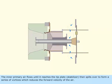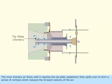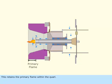The inner primary air flows until it reaches the tip plate, stabilizer, then spills over to form a series of vortices, which reduce the forward velocity of the air. This retains the primary flame within the quarl.